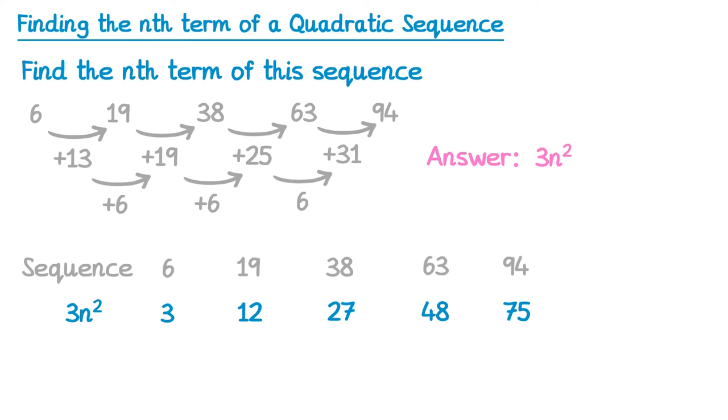What we can see now is our sequence, 6, 19, 38, and so on, is where we want to get to, but where we're at at the moment is 3n squared, which is 3, 12, 27, and so on. So we want to see what we can do to the 3n squared sequence to get back to our sequence.